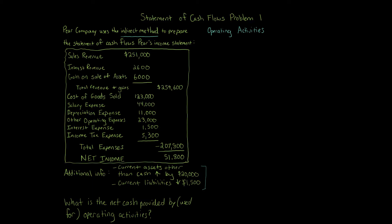Not all items affect operating activities. The first thing we need to do — we have an income statement right here. At the bottom we have net income. Net income affects operating activities, so we have net income of $51,800. The first thing you want to do is find that net income since we have an income statement.